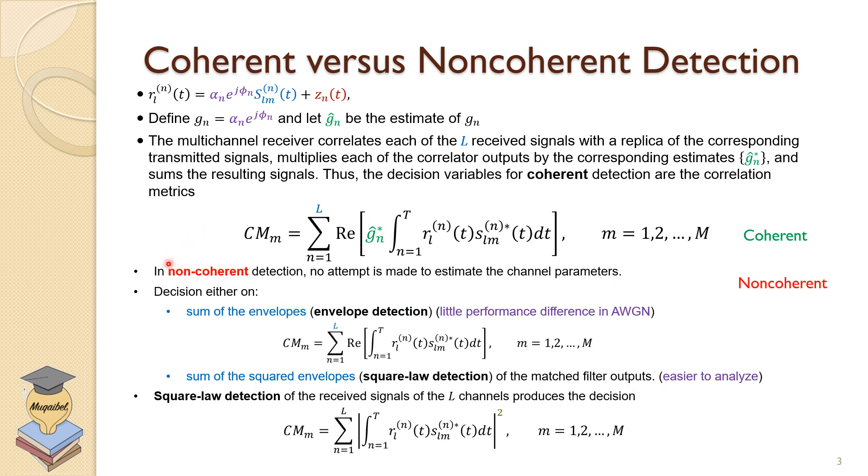Alternatively, we can do non-coherent detection, where we don't have to estimate the channel parameters. And we can just sum without the scaling. And that's called the sum of envelope detections. Of course, this is not going to be optimal, because the signals will not be aligned.